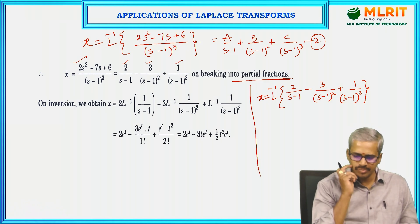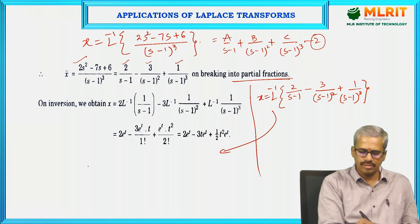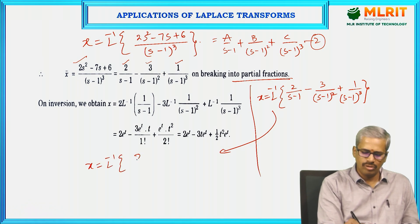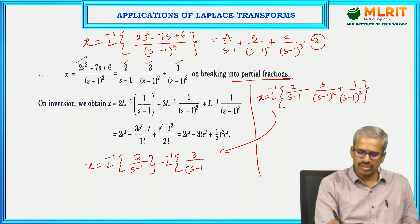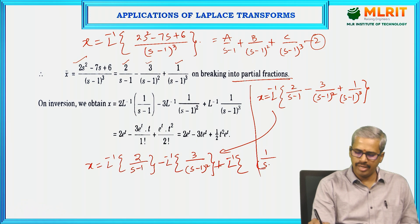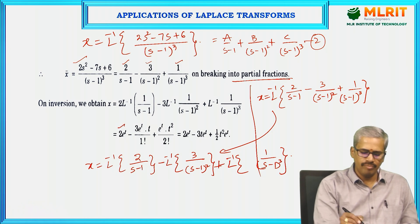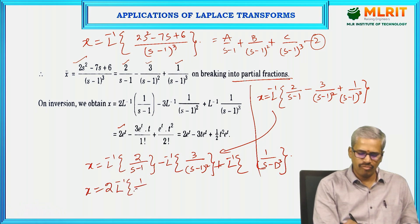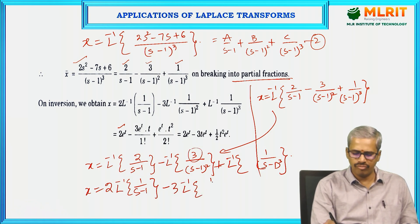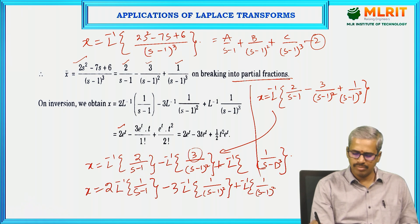Splitting this up: x equals L⁻¹{2/(s − 1)} minus L⁻¹{3/(s − 1)²} plus L⁻¹{1/(s − 1)³}. Using the first shifting theorem — since we have (s − 1) terms in the denominator — this becomes 2·L⁻¹{1/(s − 1)} minus 3·e^t·L⁻¹{1/s²} plus e^t·L⁻¹{1/s³}.